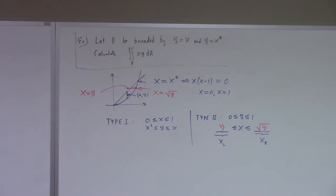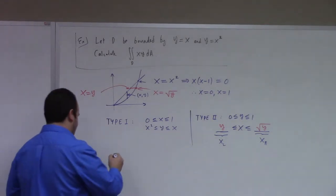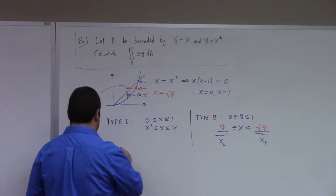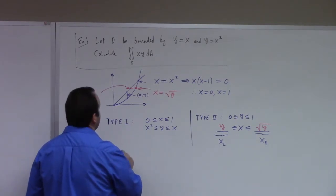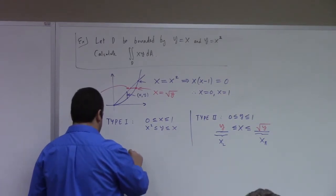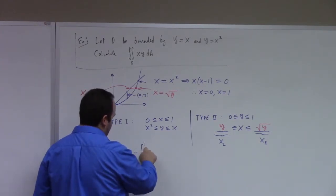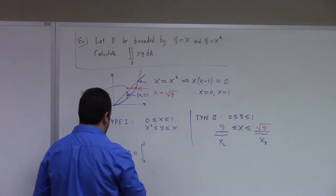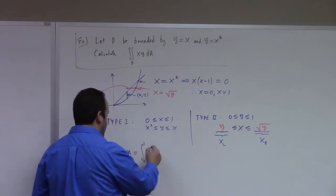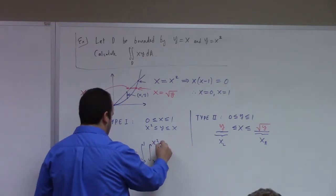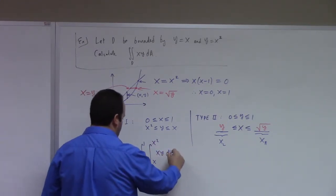So how do you guys actually want to calculate the integral — type 1 or type 2? Type 1 — no square roots. I'll accept that. So, integrate from x squared to x of xy, dy dx. Now here I definitely can't use the trick I told you about at the end of last class — I can't just multiply integrals because you have to do an order.